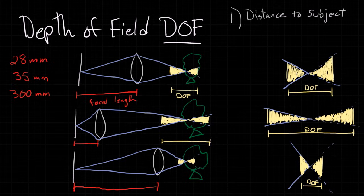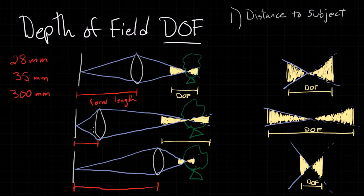This is a very exaggerated example of what's going on, just so you can see, but this is actually what's happening. So let's list that as our second way we can adjust our depth of field: focal length.